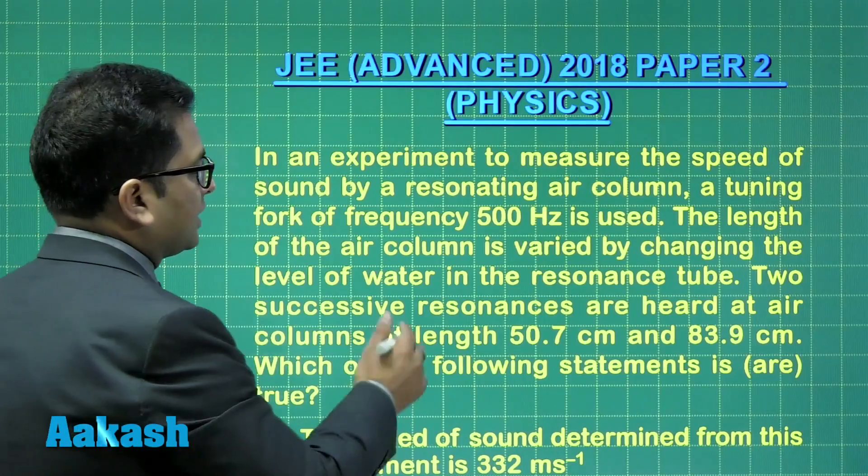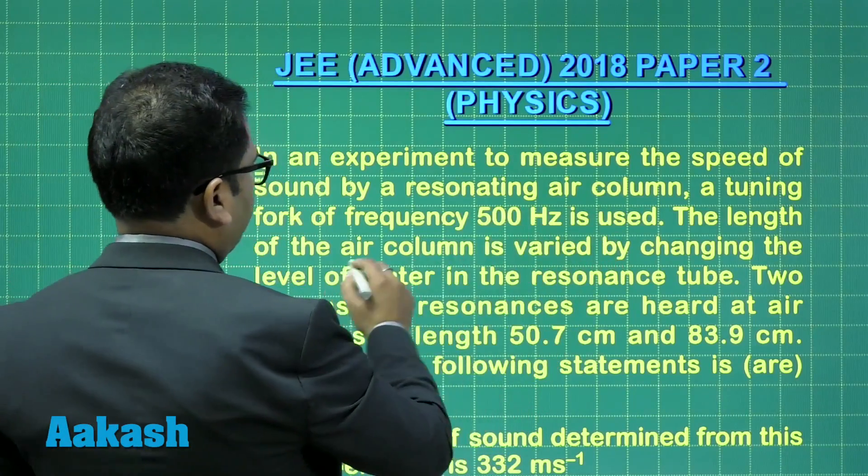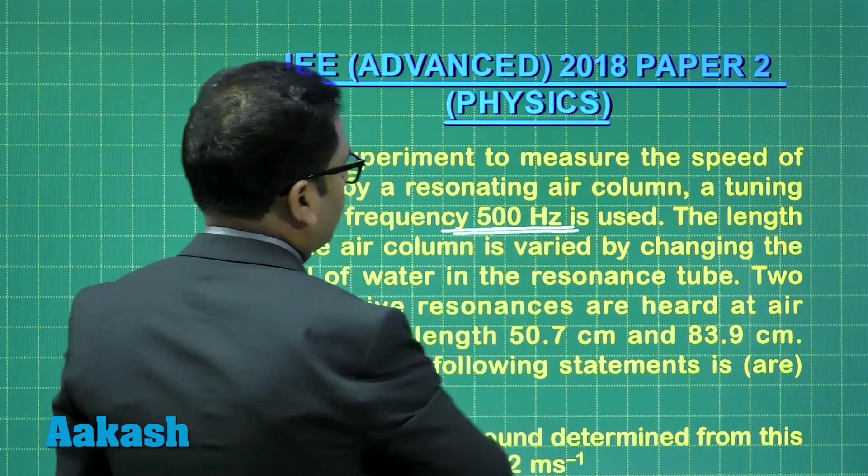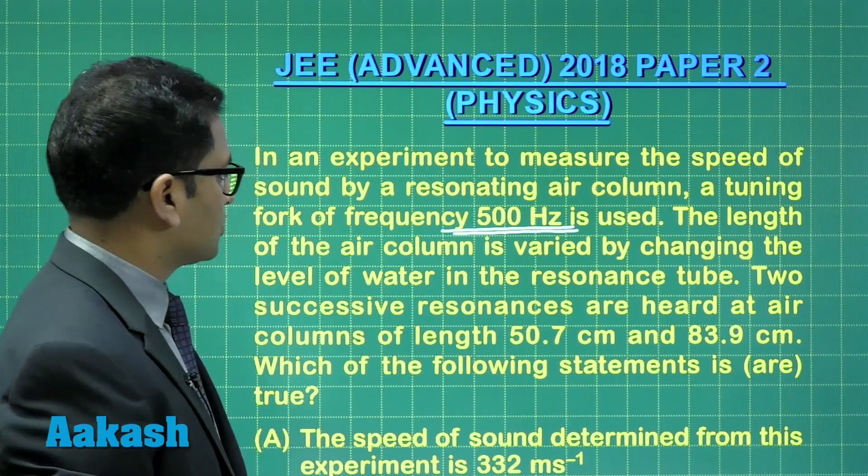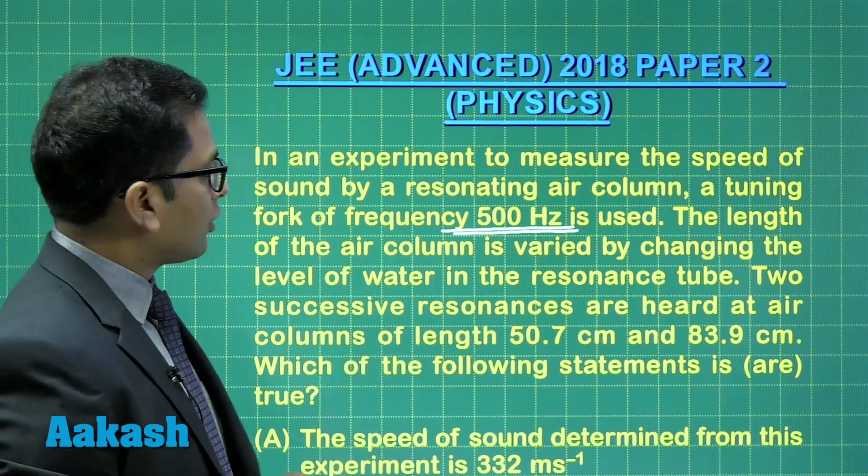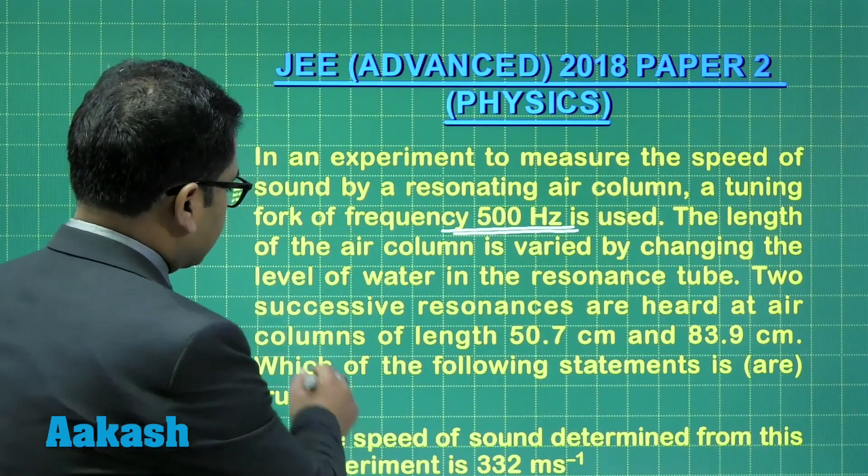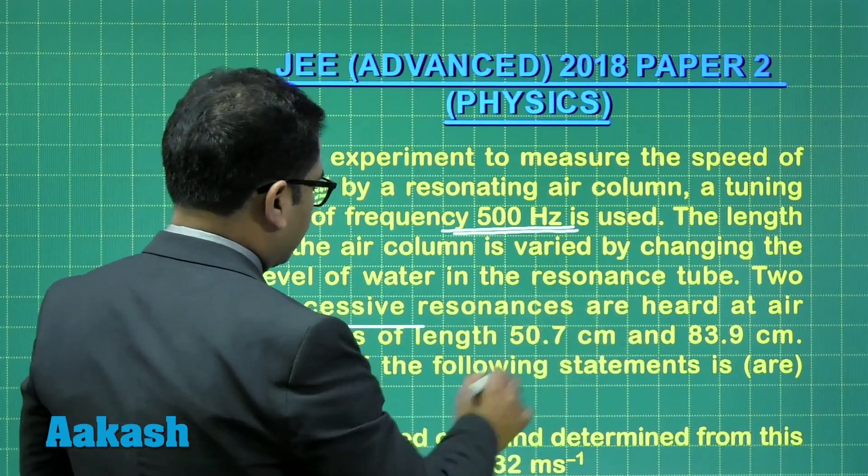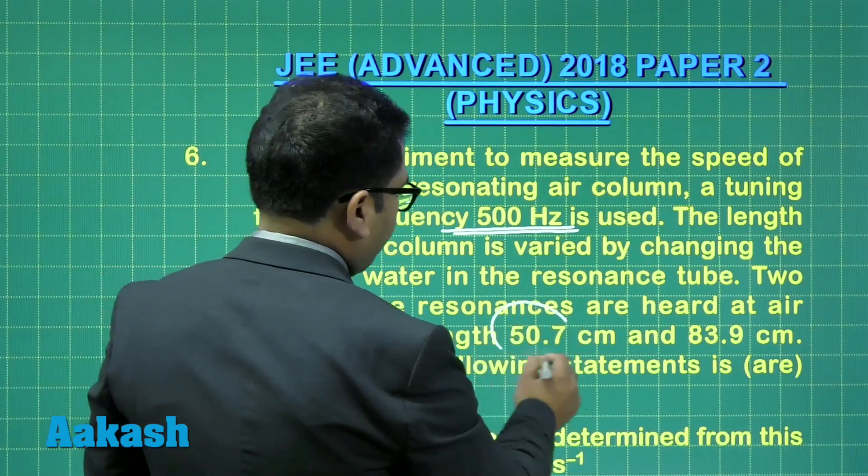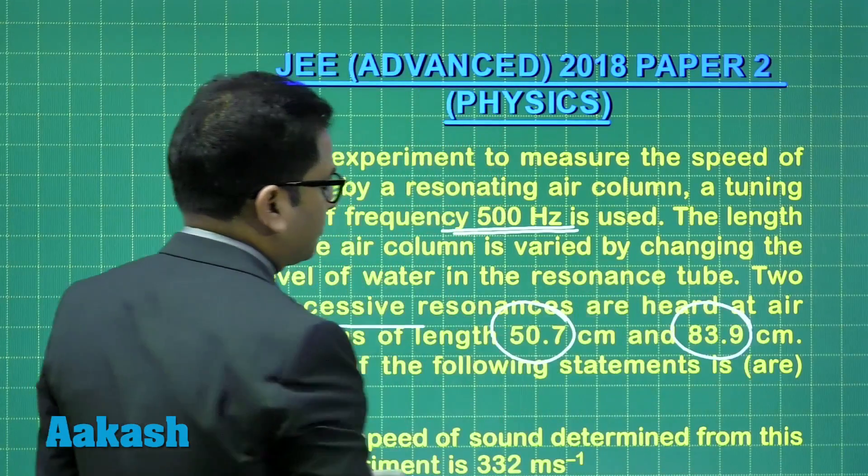It says, to measure the speed of sound by resonating air column, a tuning fork of frequency 500 Hz has been used. The length of the air column is varied by changing the level, and two successive resonances are heard at the column of length 50.7 and 83.9.